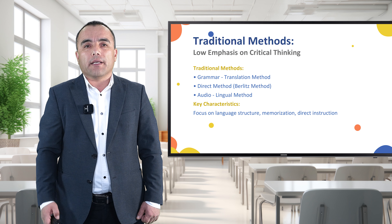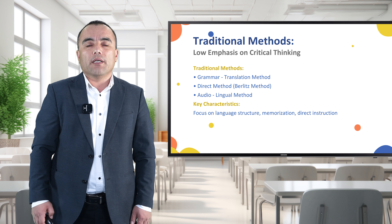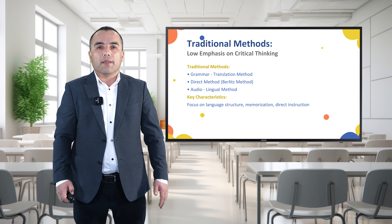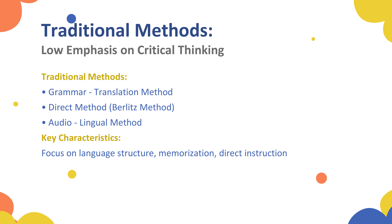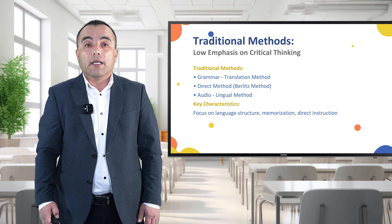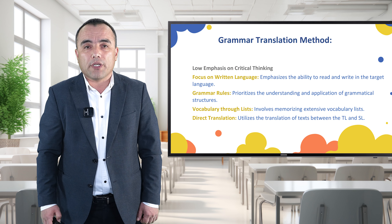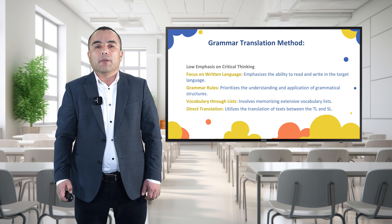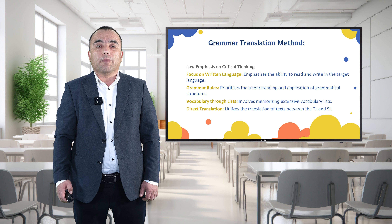Now we'll discuss traditional methods which have low emphasis on critical thinking separately. Some popular traditional methods are the grammar translation method, the direct method, and the audiolingual method. These have key characteristics that focus on language structure, memorization, and direct instruction. For example, the grammar translation method, which has a low emphasis on critical thinking, focuses on written language, emphasizing the ability to read and write in the target language and prioritizing the understanding and application of grammatical structures.